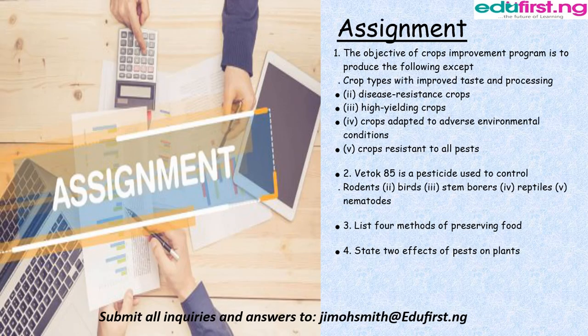Exercise. 1. The objective of a Crops Improvement Program is to produce the following except: crop types with improved taste and processing, disease-resistant crops, high-yielding crops, crops adapted to adverse environmental conditions, or crops resistant to all pests. 2. Vector H5 is a pesticide used to control: rodents, birds, stem borers, reptiles, or nematodes. 3. List four methods of preserving food. 4. State the effects of pests on plants.